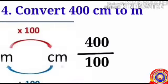To convert centimeter to meter, divide by one hundred. So four hundred divided by one hundred equals four meters.